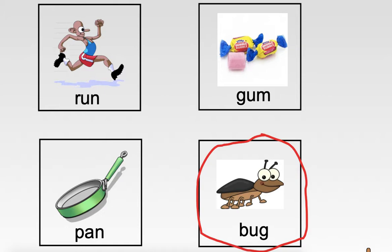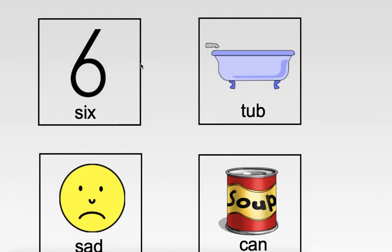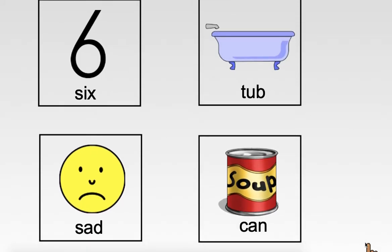Let's look at a new set of four pictures. Point with me as I tell you each one. Six, tub, sad, can. Okay, let's listen for the letter sounds and find out what picture it is.